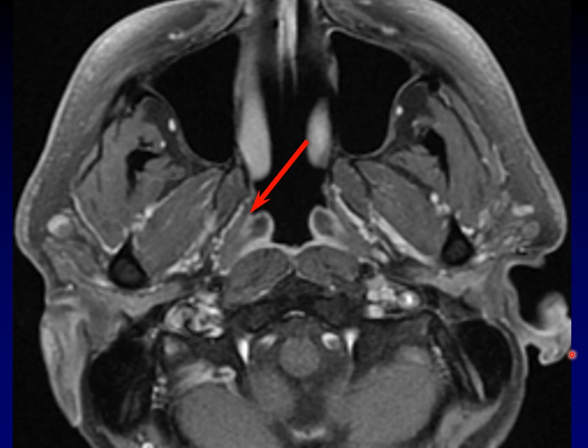Just lateral to the torus tubarius is the opening of the eustachian tube — that's what the torus tubarius is doing, cupping over that opening. Behind the torus tubarius is the fossa of Rosenmuller, a potential space formed by two layers of mucosa. You can watch the mucosa come back, make a U-turn, and come back around again — it's just a little pocket back there. This is a common location for nasopharyngeal carcinoma to arise.